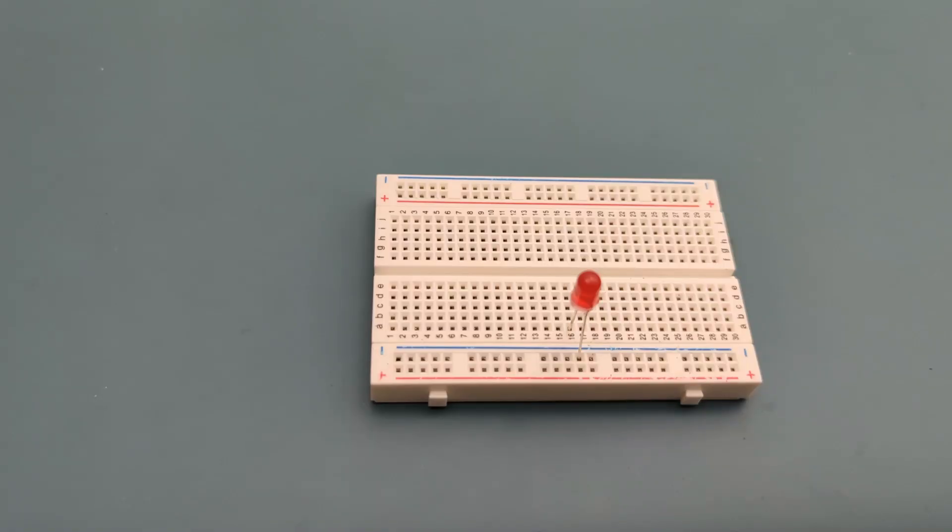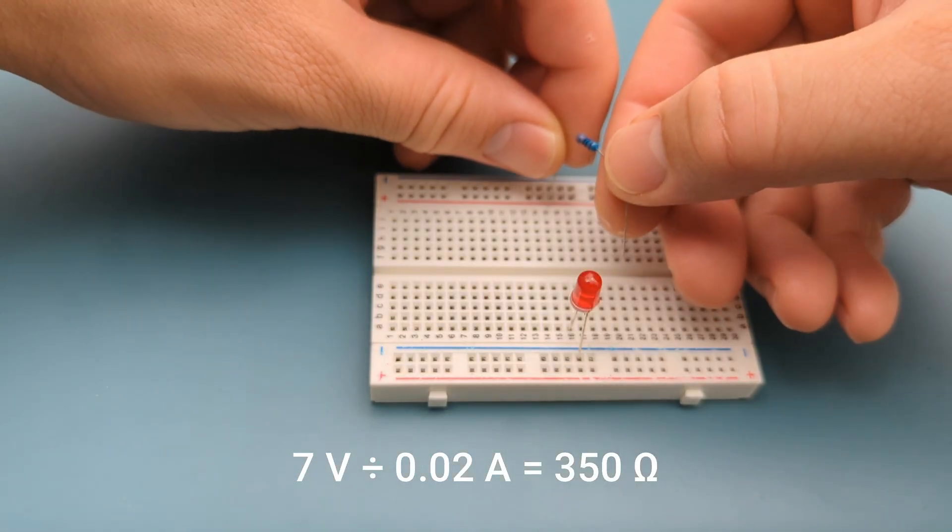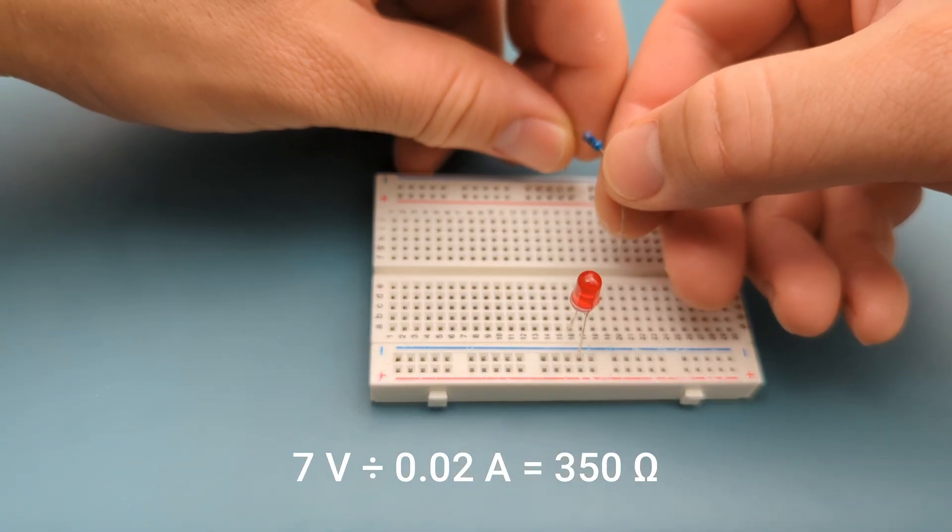Let's walk through a 9-volt LED setup like a pro. Say you're using a red LED that drops about 2 volts and you want around 20 milliamps. The resistor needs to handle the leftover voltage. 9 volts minus 2 volts equals 7 volts. Using R equals V divided by I, 7 volts divided by 0.02 amps equals 350 ohms.